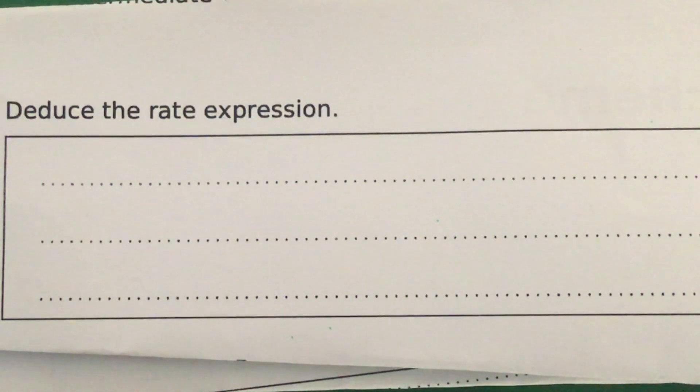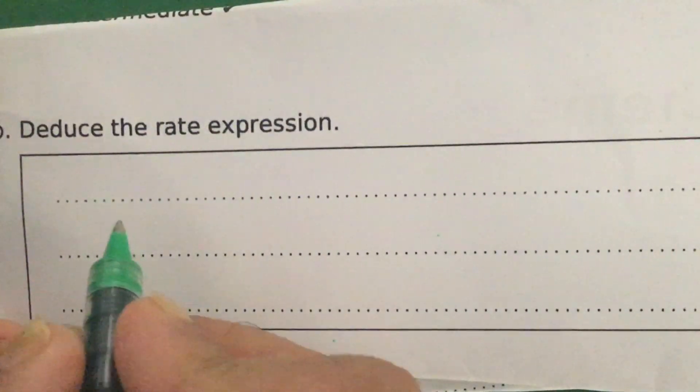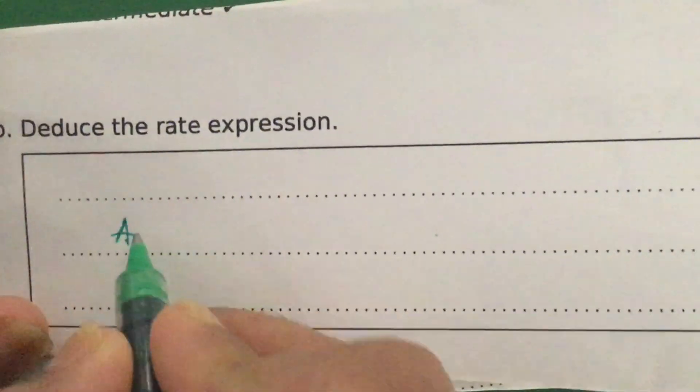does it have to be included in the rate expression? Well if we think about it like this: when you don't have the catalyst the rate is slow. When you put a tiny amount of catalyst the rate increases. If you increase the amount of catalyst incrementally, then you notice that there is a relationship between changing the amount of catalyst and changing the rate of the reaction. So therefore, if the slow or rate determining step involves A plus B